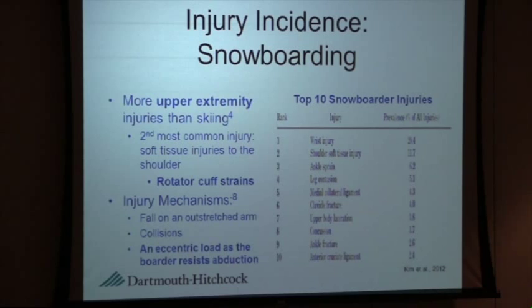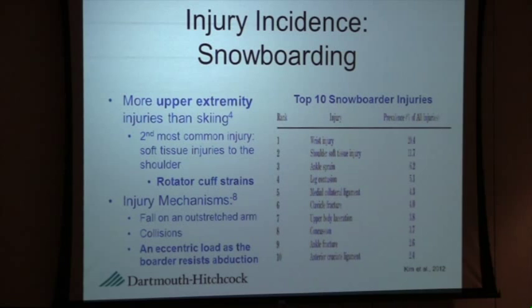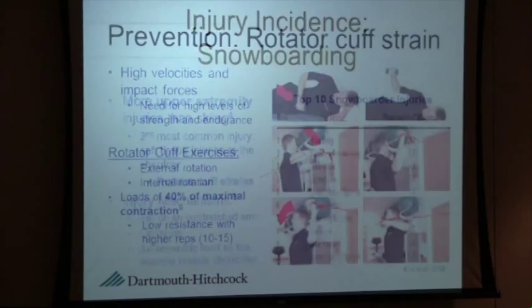The mechanisms proposed for snowboarder shoulder injuries are falls on outstretched arms, collisions, and an eccentric load to the shoulder as the boarder resists abduction. Basically, the boarder is off balance or falling, tries to catch themselves and control the rate of descent, creating a large load to a smaller muscle group in the shoulder that's not strong enough to withstand that force.